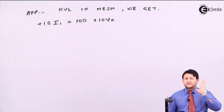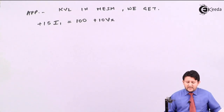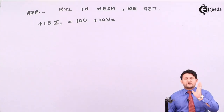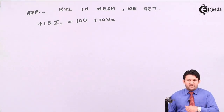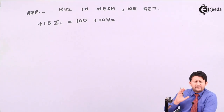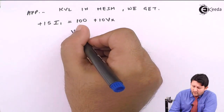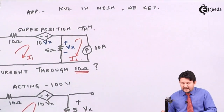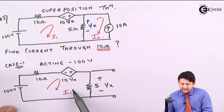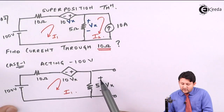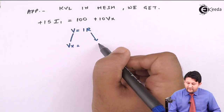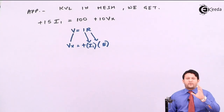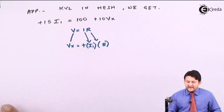The equation contains the extra unknown Vx, so we need an expression for it. By Ohm's law, V = IR. Vx is across the 5Ω resistor, and I1 flows through it entering the positive terminal, so Vx = +5I1. Substituting: 15I1 = 100 + 10(5I1), which gives 15I1 = 100 + 50I1.